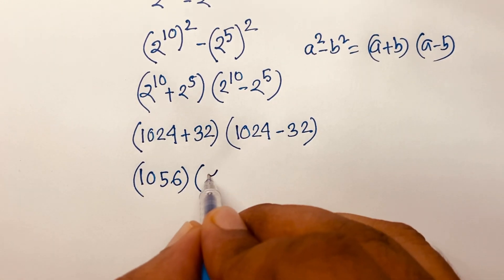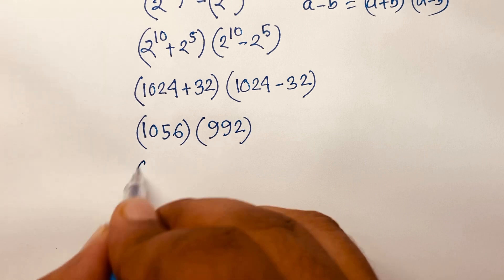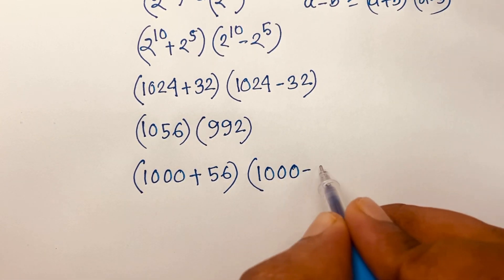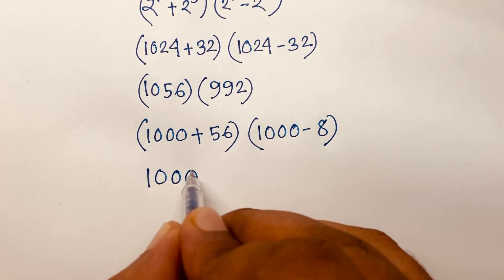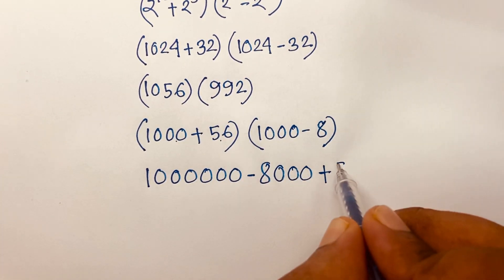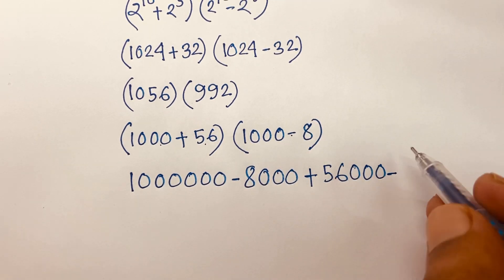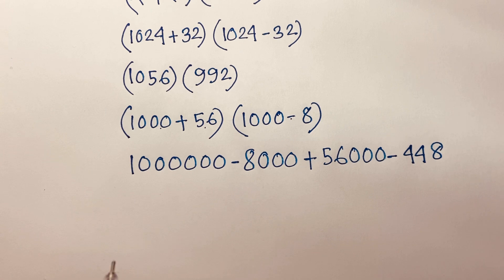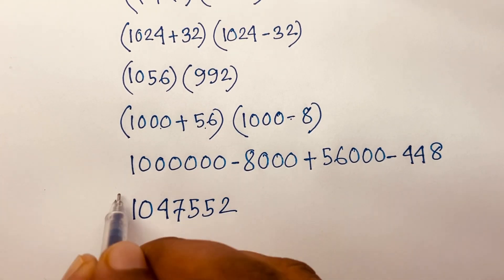1056 times 992. I can rewrite this as (1000 plus 56) times (1000 minus 8). Expanding: 1000 times 1000 is 1,000,000; 1000 times minus 8 is minus 8000; 56 times 1000 is 56,000 — wait, 5600; and 56 times minus 8 is minus 448. Adding and subtracting all values, the final answer is 1,047,552.